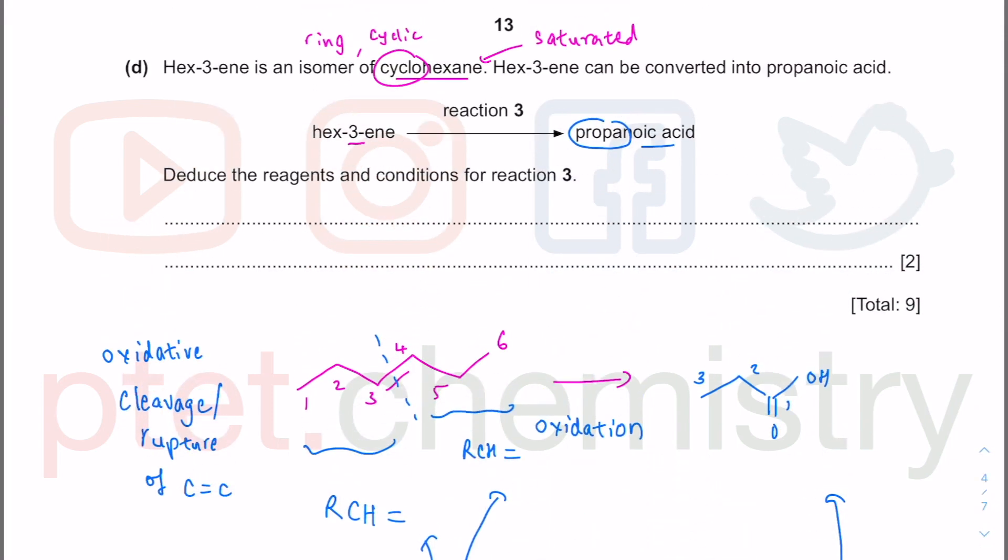Your reagents must be a very strong oxidizing agent. This is called acidified KMnO4. What I usually like to write is acidified as H+ instead of KMnO4. I just write the MnO4- because this is the active ingredient in this oxidizing agent. And I have to heat it up - hot and concentrated MnO4-.